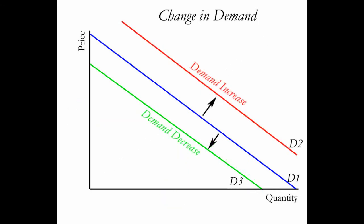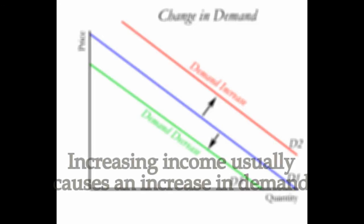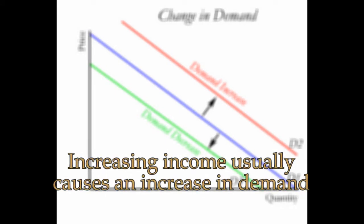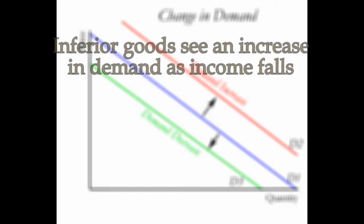Shifts in the demand curve can be caused by factors that allow us to buy goods. For example, a shift in our income or our expected future income changes our ability to buy goods. An increase in income typically increases demand. An exception lies in the case of inferior goods, where a decrease in income causes an increase in demand.